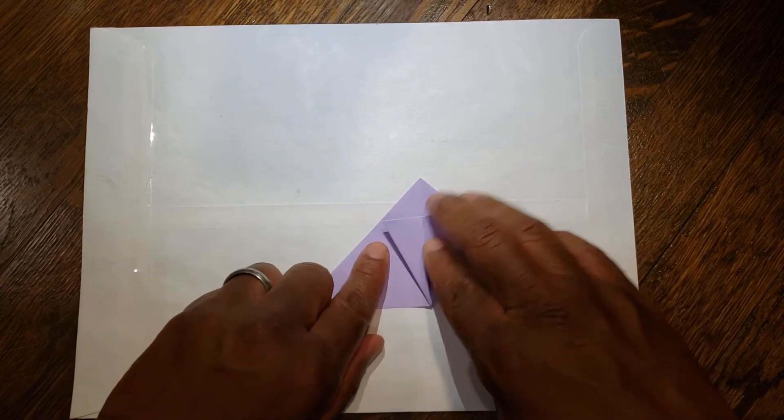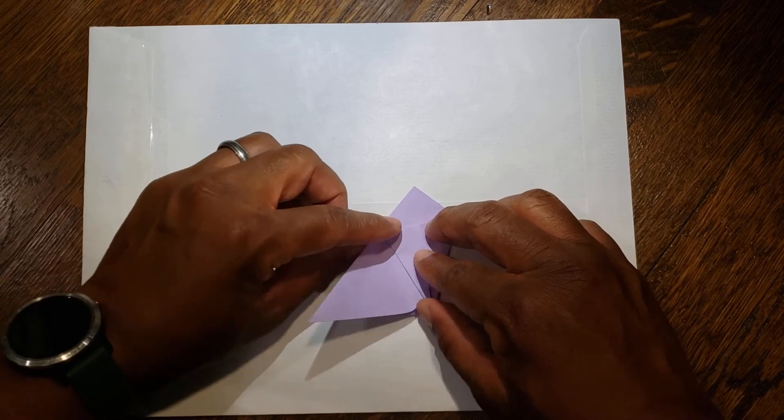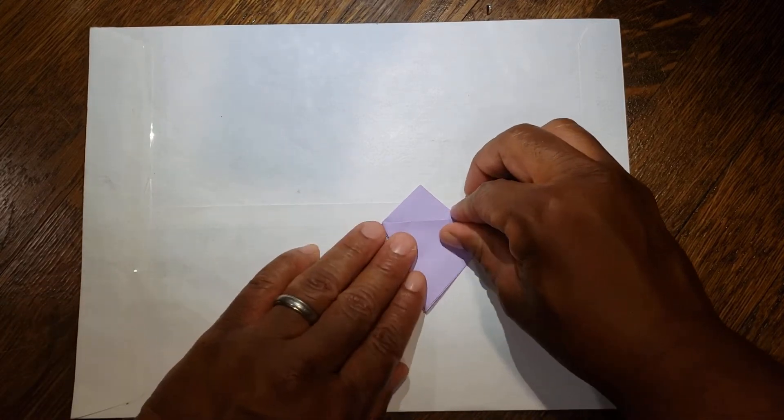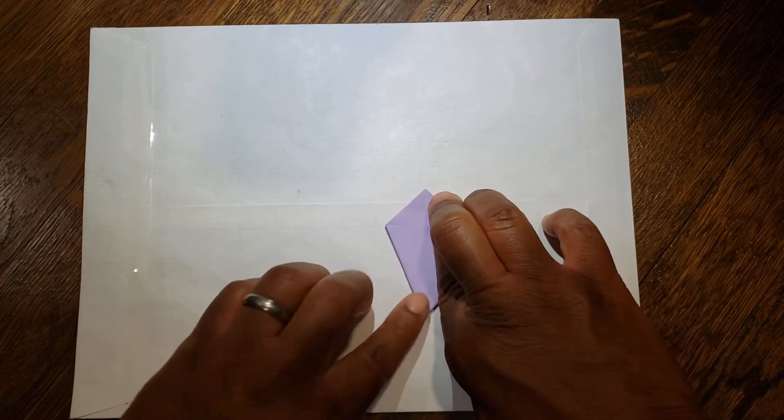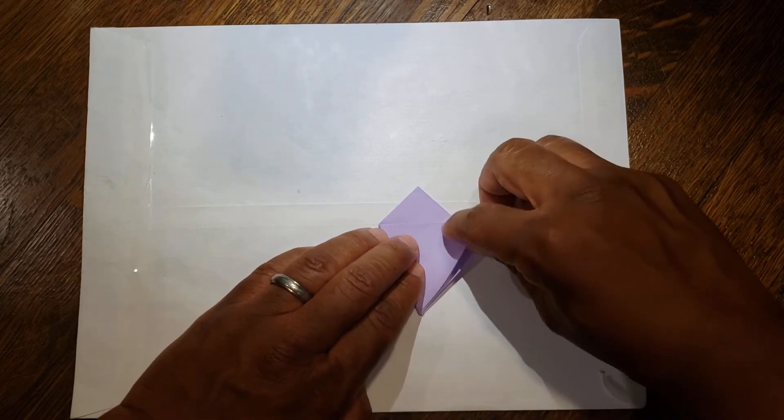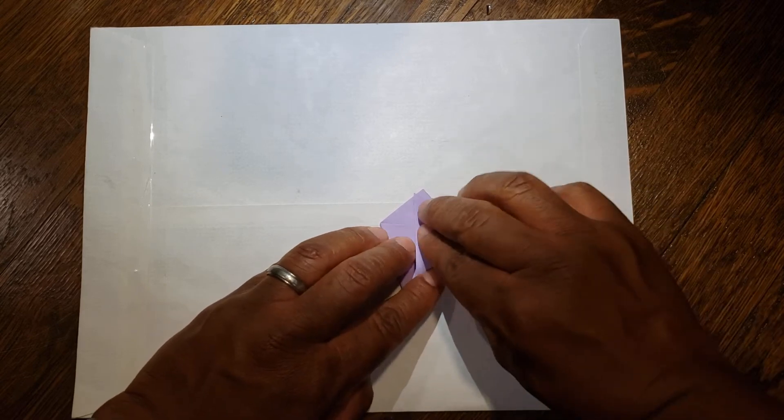One last time, using this diagonal as a guide, take the left flap and fold it over. Take this corner and fold it up to the top.